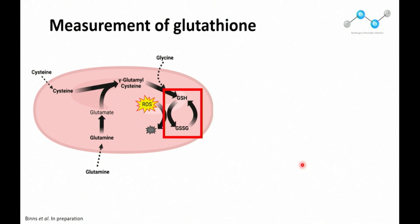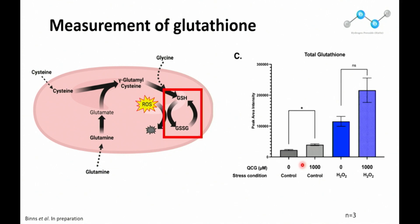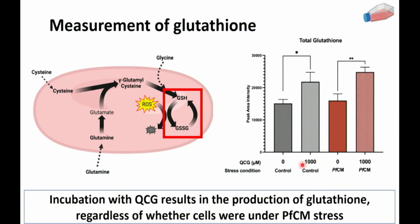To understand whether the cells actually made glutathione — since just looking at ROS and echinocytes doesn't tell us that — we turned back to mass spec. We measured the amount of total glutathione in these cells, both with hydrogen peroxide and with spent media. What we found, which is pretty interesting, is that cells do produce more glutathione when they have the QCG, but with or without stress — it happens in the control, in hydrogen peroxide, and in spent media. This suggests that incubation with QCG results in increased glutathione production regardless of whether the cells are under stress.